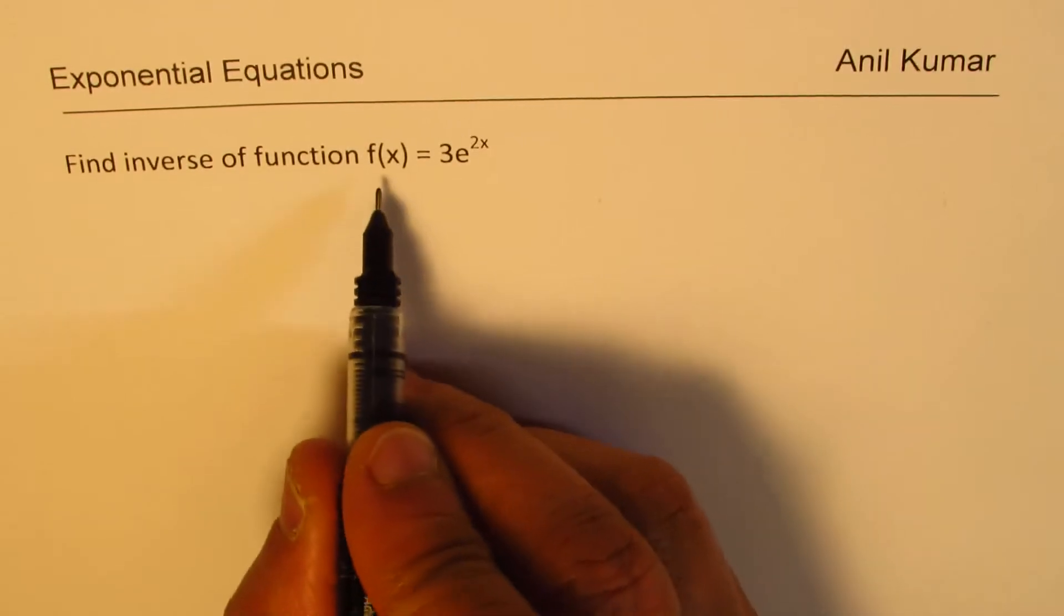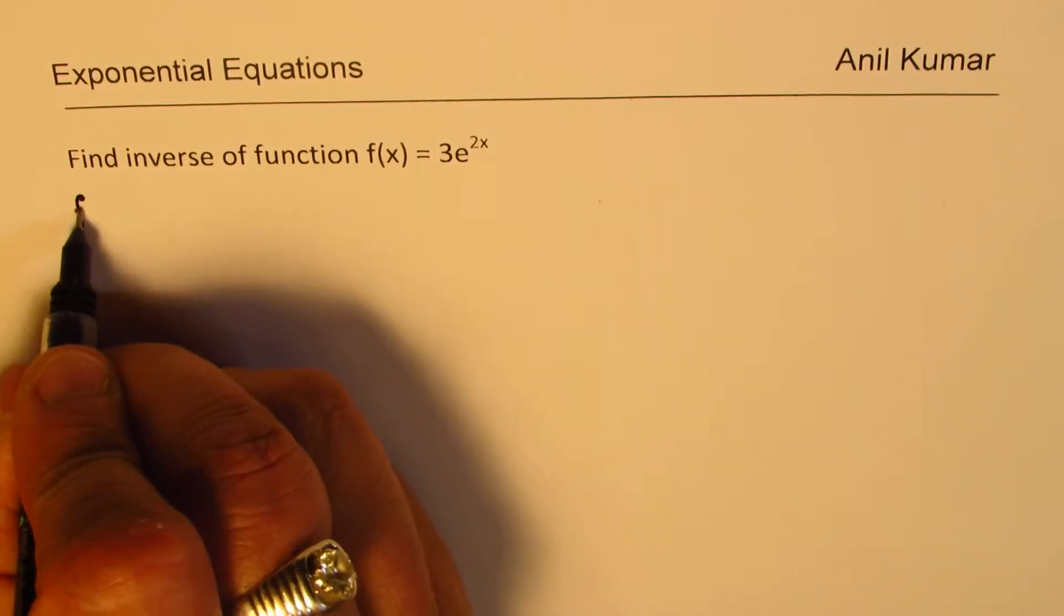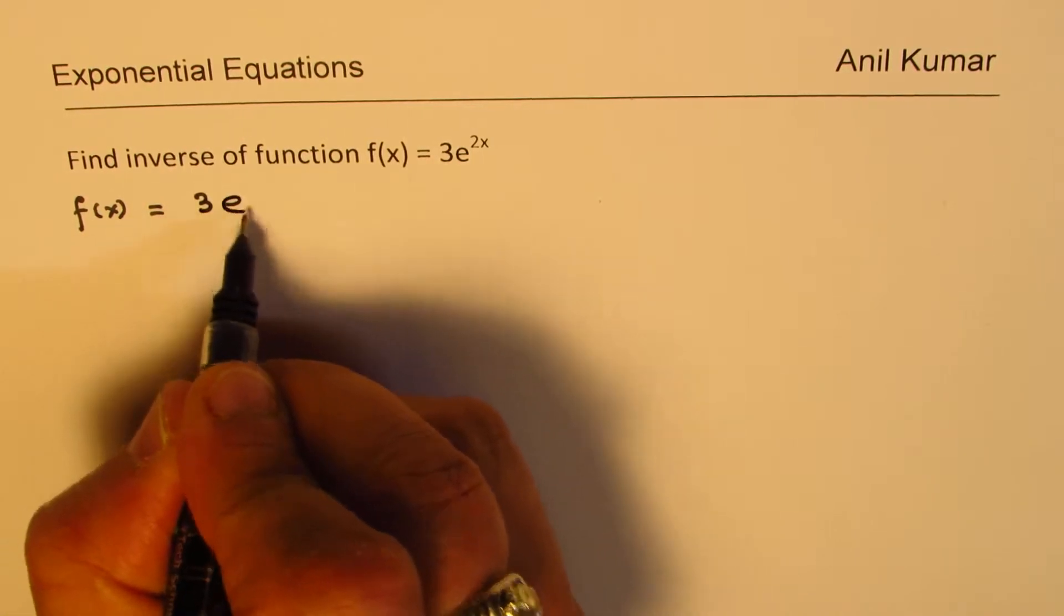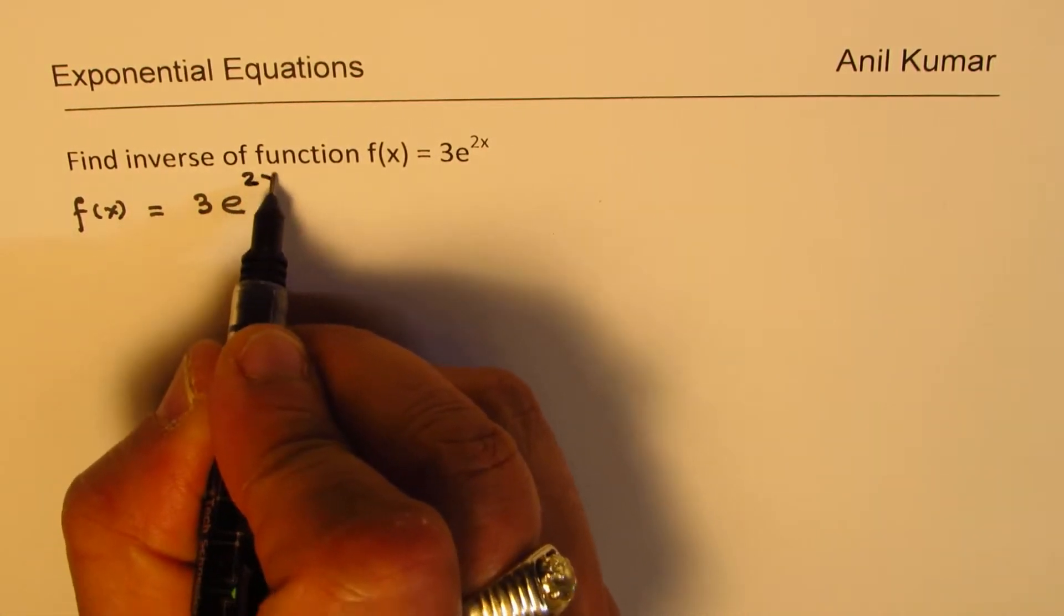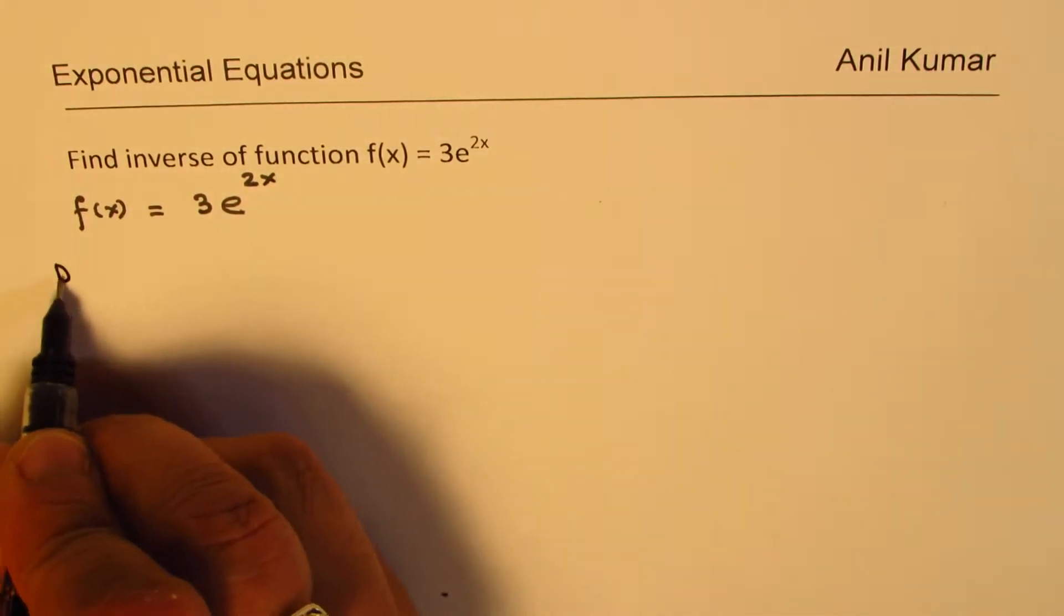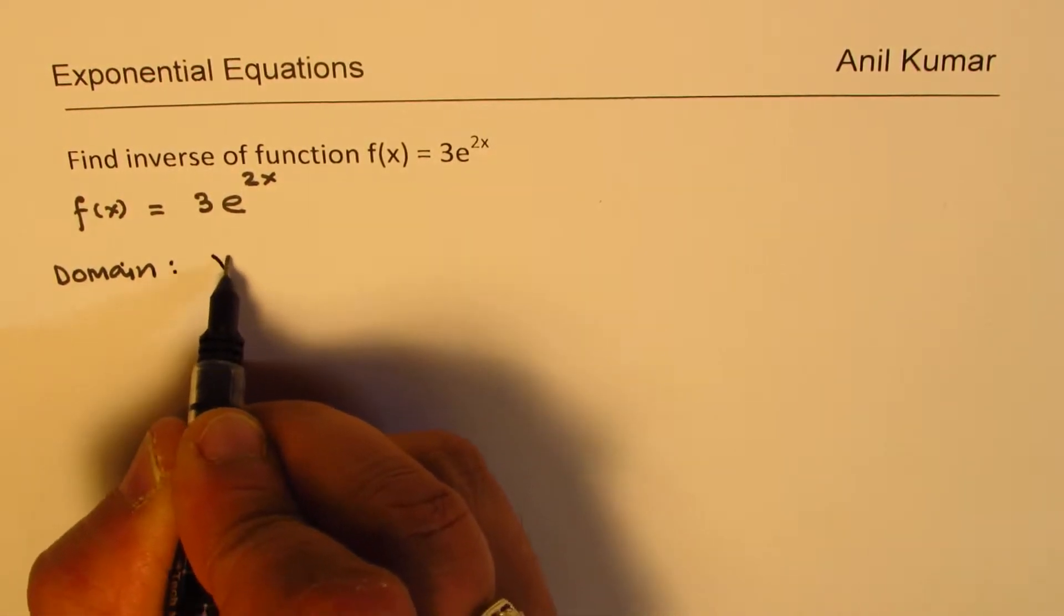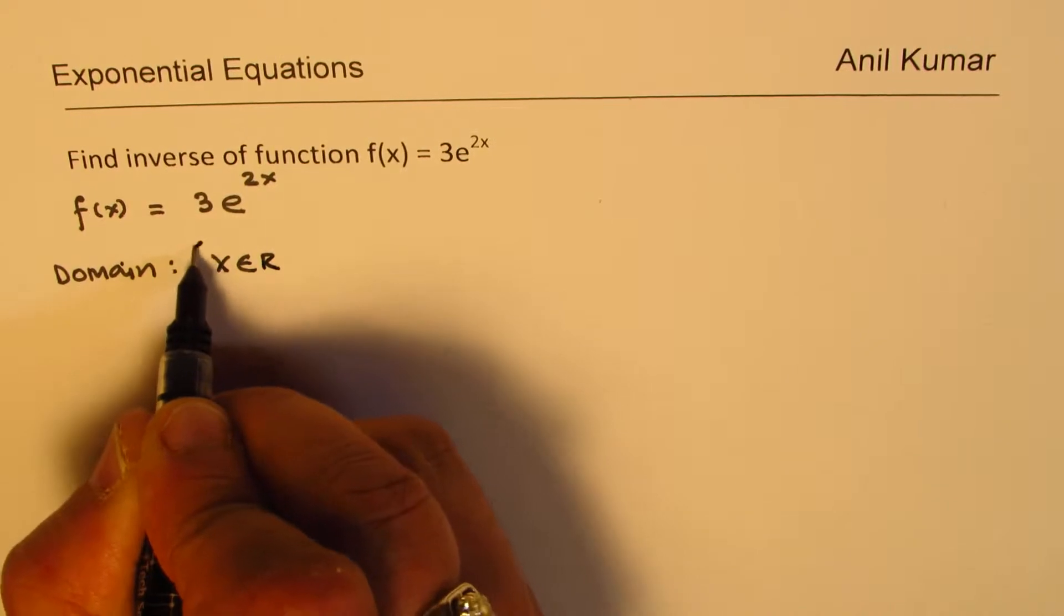Now, let us try to understand the function itself first. So we are given f(x) equals 3 times e to the power of 2x. What is the domain of this function? Let's write down. Now, domain has no restriction. x belongs to real numbers is the domain.